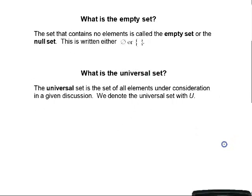What is the empty set? The set that contains no elements is called the empty set or the null set. The notation we use is either a zero with a slash through it (∅) or a set of braces with nothing in them ({}). The braces notation makes it easy to see that the set has nothing in it.